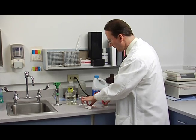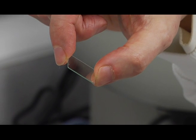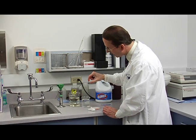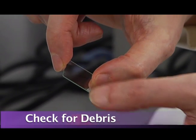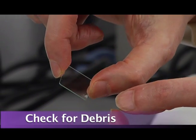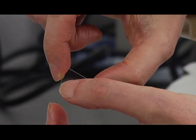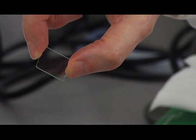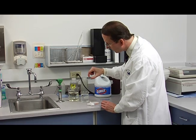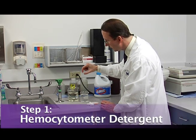Then we will wash the cover slip the same way. So you want to look at your hemocytometer cover slip and check for any debris or film on it. Generally, the places that will have the most debris on it will be these corners here and these edges. That's where material is most likely to dry on the cover slip. So even if I don't see any material on it, I will still go through the washing procedure.